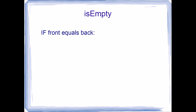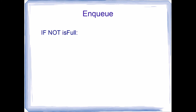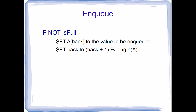For ISEMPTY: if front equals back, no matter what those values are, we return true — the queue is empty. Otherwise, return false. For ENQUEUE, the operation for adding a value to the end of the queue: first check if the queue is full. If it's not, set A[back] to the value to be enqueued. Then increment back using the modulus approach: set back to (back + 1) modulus length of A. That's all there is to it.